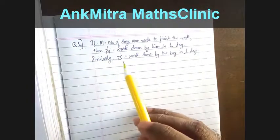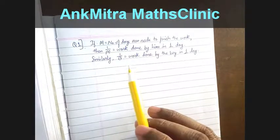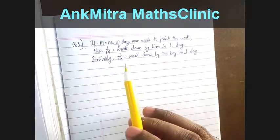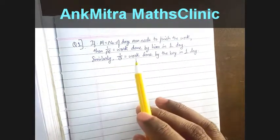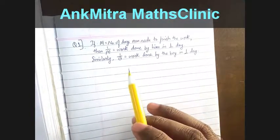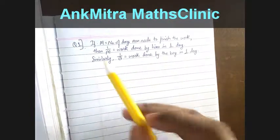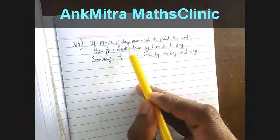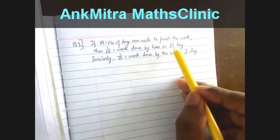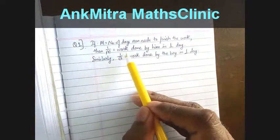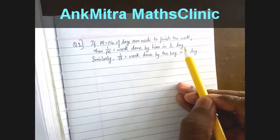In sums like these we generally use the number of days taken to finish the work to represent it in the form of the amount of work done in one day. So if m is the number of days a man takes to finish the work, then 1 upon m will be the work done by him in one day.